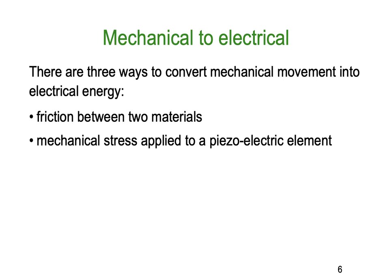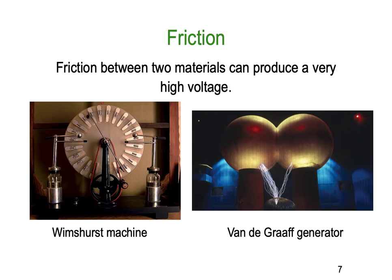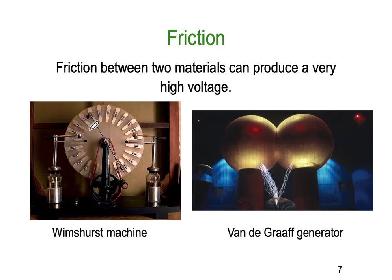Mechanical stress applied to piezoelectric elements — and the very microphone I'm using to record this lesson uses that feature. Moving a conductor in a magnetic field is the third one and is the very large one — it's the one we use most of the time. Here you can see a picture of different friction. The first is the Wimhurst machine, which works by literally rubbing electrons off the little dash elements onto a brush, and that energy builds up until you get a discharge across the air between the little spheres.